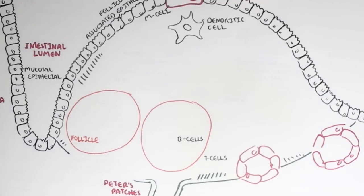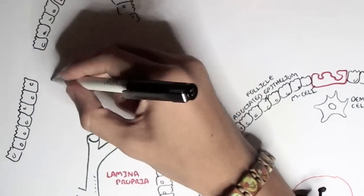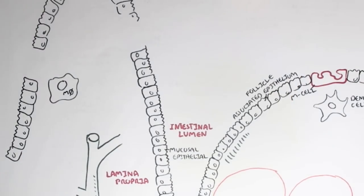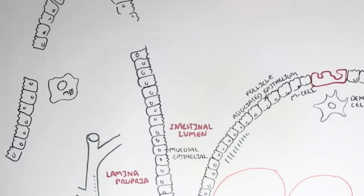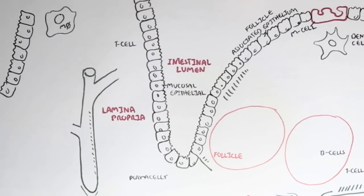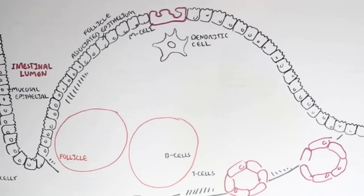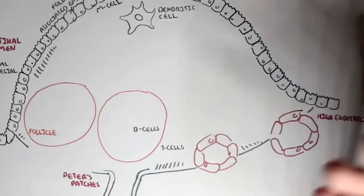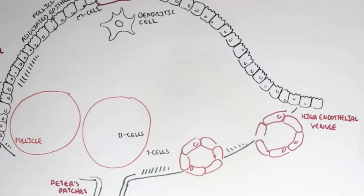Now let's talk about the lamina propria. Lamina propria is connective tissue and contains a vast array of actually activated immune cells. The lymph vessels also connect to the lamina propria, where immune cells can go in and out. The lamina propria contains macrophages, phagocytes, and also activated CD8 and CD4 T cells, or T killer and T helper cells. They also contain plasma cells, which are the activated B cells. Therefore, the lamina propria is very important in essentially preventing infection beforehand.